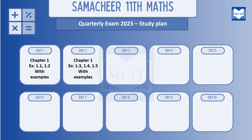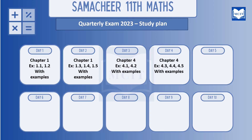In two days, we finish the first chapter easily. Day 3: we will do Chapter 4, which is very easy compared to Chapter 2 and Chapter 3. We will understand the formulas and concepts. Chapter 4, exercise 4.1 and 4.2 with examples. Day 4: continue Chapter 4, exercise 4.3, 4.4, and 4.5 with examples. In two days you can finish Chapter 4 easily.